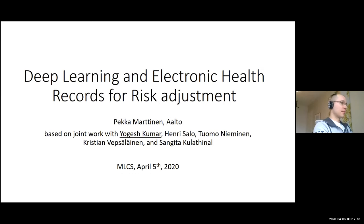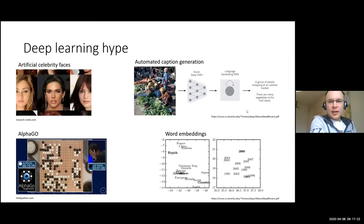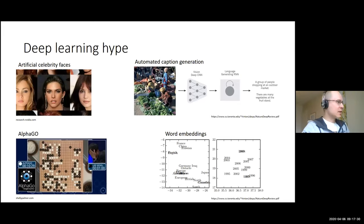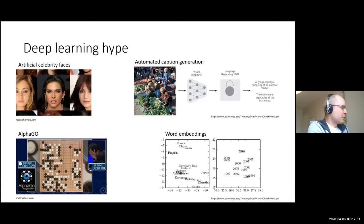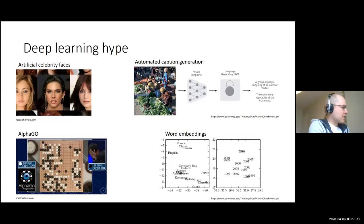To give a quick introduction to deep learning: it has been extremely successful in a wide variety of tasks in recent years. In the upper left corner there is research from Jakko Lehtinen's group at Aalto where deep neural networks were used to generate artificial celebrity faces that look extremely real. Other success stories include AlphaGo, long thought to require uniquely human understanding of complex patterns, but now computers outperform humans at it as well.